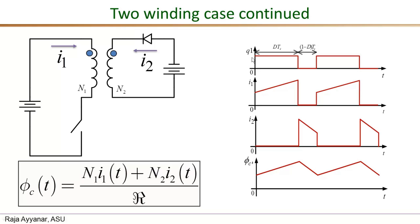The first waveform is the gate drive waveform — when Q is one the switch is on, Q is zero means the switch is off. When the switch is on, we apply the input voltage V_in across the primary winding, positive at one end and negative at the other, with magnitude V_in only during the Q equals one interval. Because of that, the induced EMF on the secondary side will also be positive at the dot, which reverse biases the diode. Therefore there is no current on the secondary side — i2 is zero.